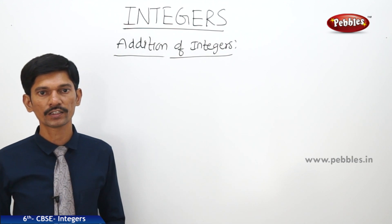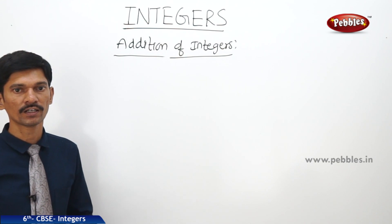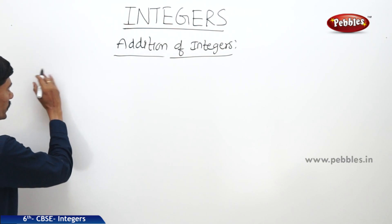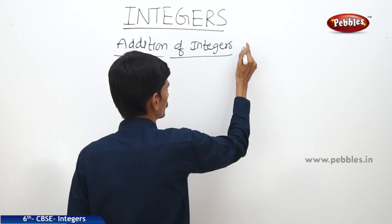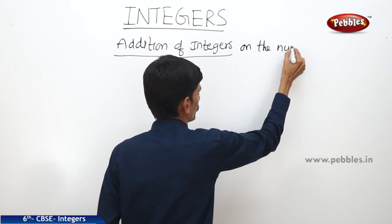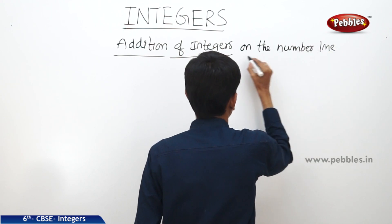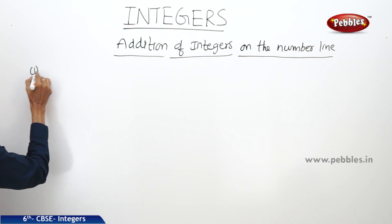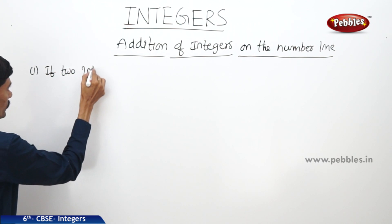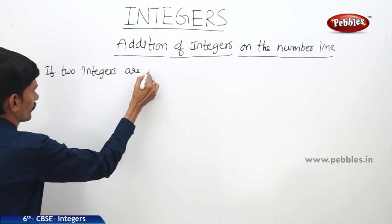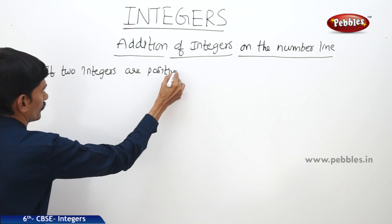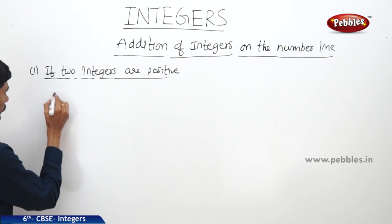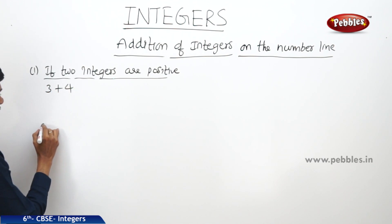It is not always easy to add two integers using plus and minus symbols. So we can add any two integers using the number line. Now, addition of integers on the number line — first case: if two integers are positive. For example, if you want to add 3 plus 4, the two integers are positive.